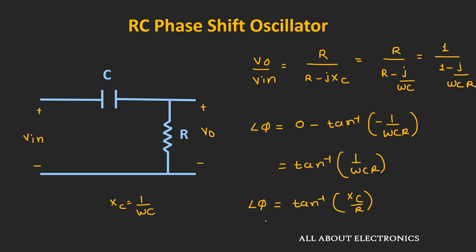The phase shift depends on the values of R and capacitance C. For very small values of Xc, the phase shift will be equal to zero. When R equals zero, the term Xc/R becomes infinite, and the phase shift provided by the circuit will be equal to 90 degrees. So this RC circuit provides a phase shift between 0 and 90 degrees.